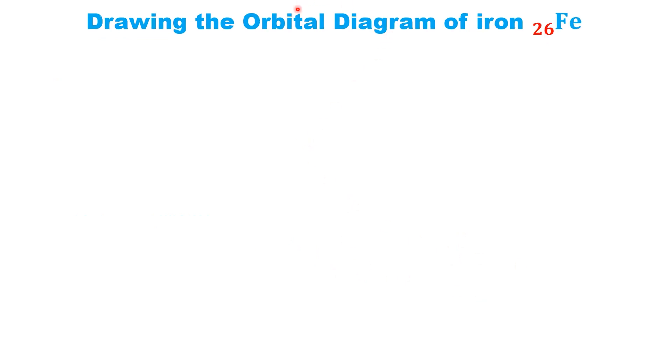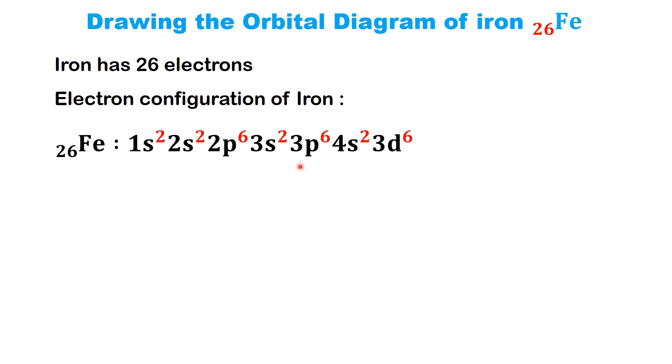Let's move on to our second example, drawing the orbital diagram for iron. Iron has an atomic number of 26, which means it has 26 electrons to arrange in its orbitals. To start, we need to identify the electron configuration of iron. For iron, the electron configuration is 1s2, 2s2, 2p6, 3s2, 3p6, 4s2, 3d6. Now, we'll draw the orbitals in increasing energy. Just like we did with nitrogen, we'll start by drawing the boxes.